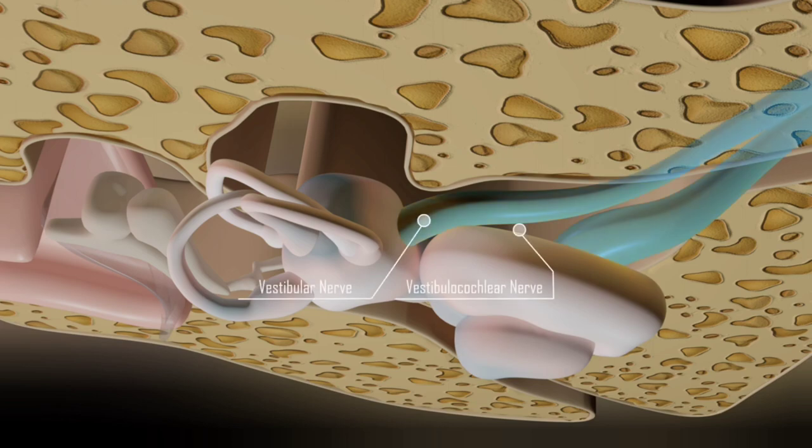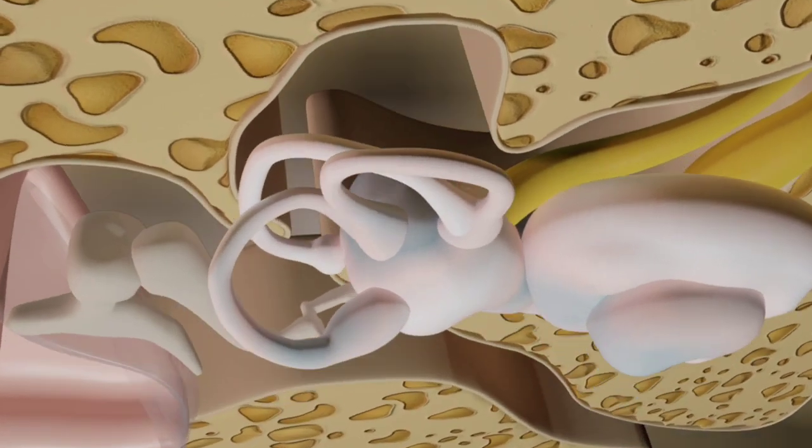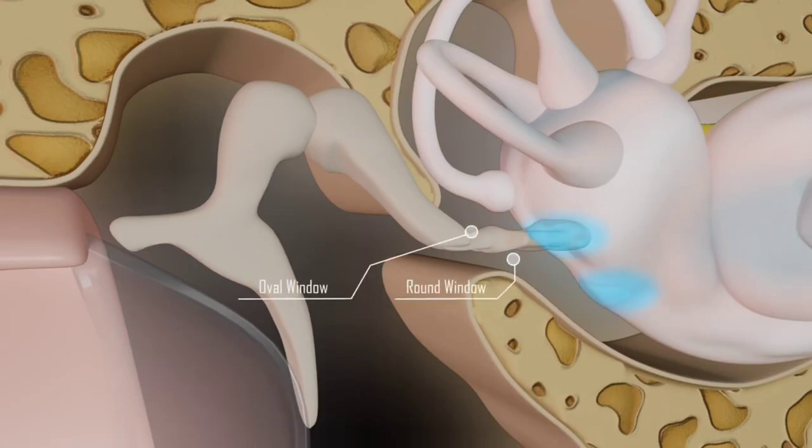And around the corner, you have the vestibular nerve and the vestibular-cochlear nerve. These nerves communicate messages about head position and motion. The oval and round window play an important role in fluid and sound transmission.